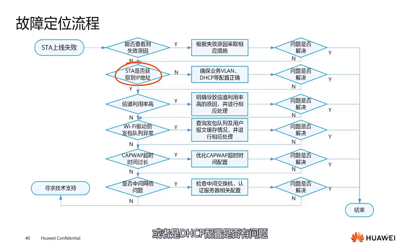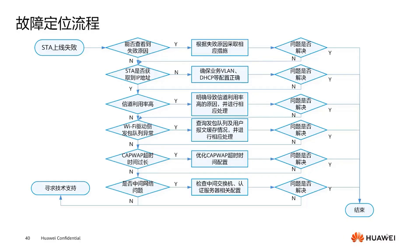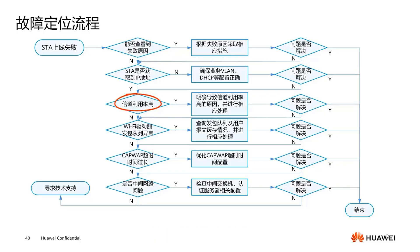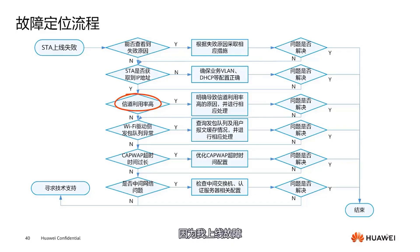The third step is the issue of channel utilization. If the channel utilization is high, you need to consider adjusting and optimizing the channel. Because if the fault is high channel utilization, then it's a wireless issue. Determine if the problem is channel utilization or co-channel interference.